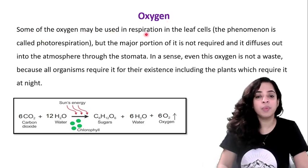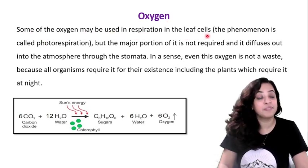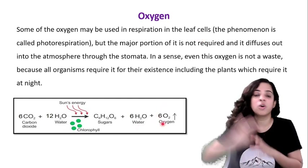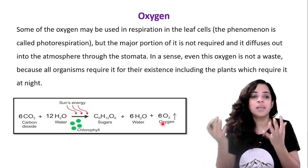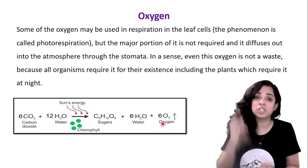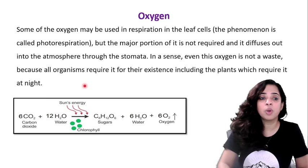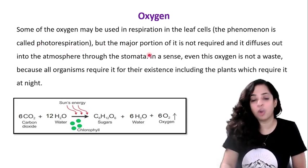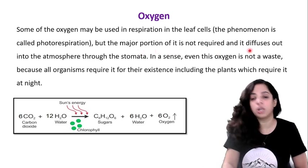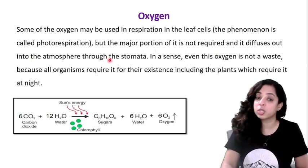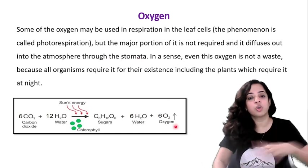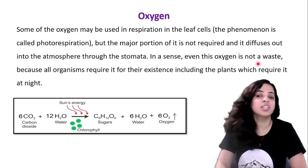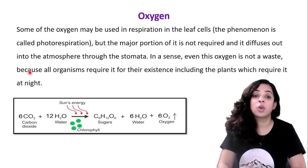Now about oxygen: some of the oxygen produced may be used in respiration within the leaf cells themselves — this phenomenon is called photorespiration. But the majority of the oxygen is not required by the leaf, so it diffuses out into the atmosphere through the stomata.